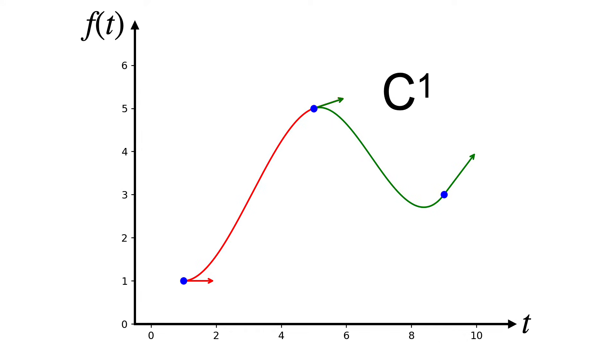But Catmull-Rom is just one option. If we go back to our two curves, we have one degree of freedom, which is the tangent at the knot. Instead of choosing the tangent, let's add a different constraint. Let's make the second derivative the same.